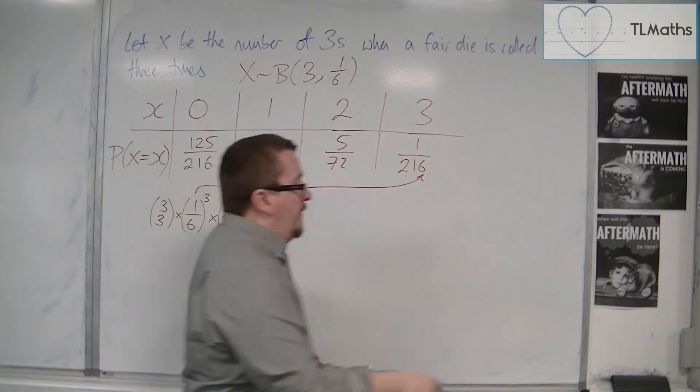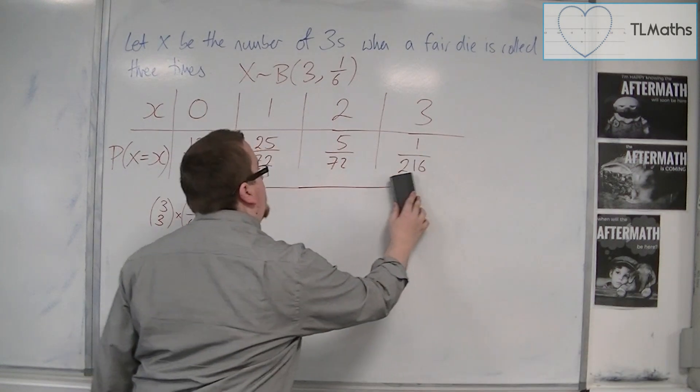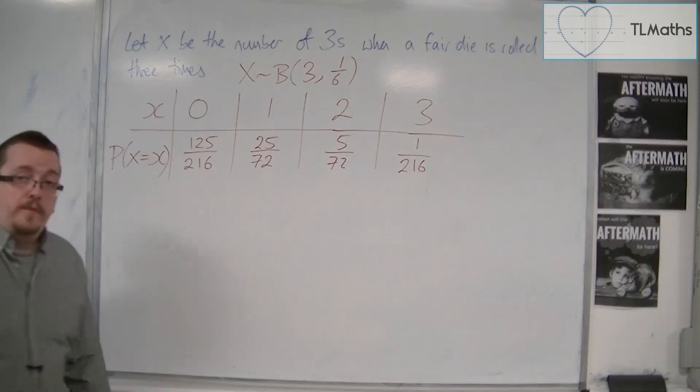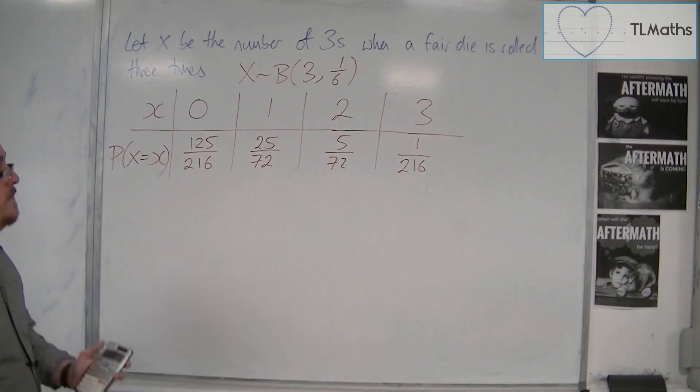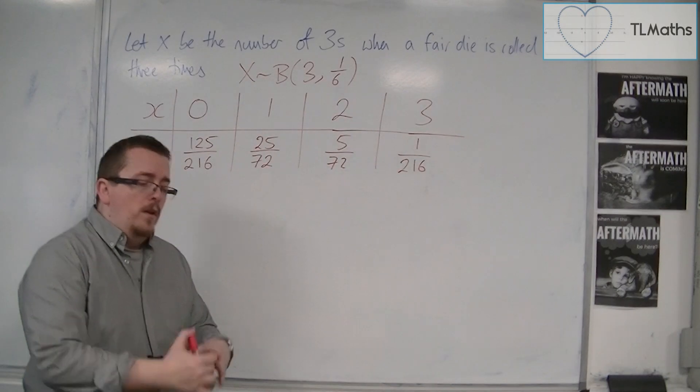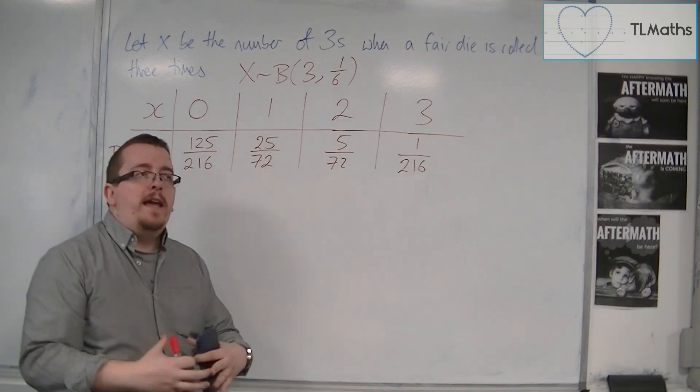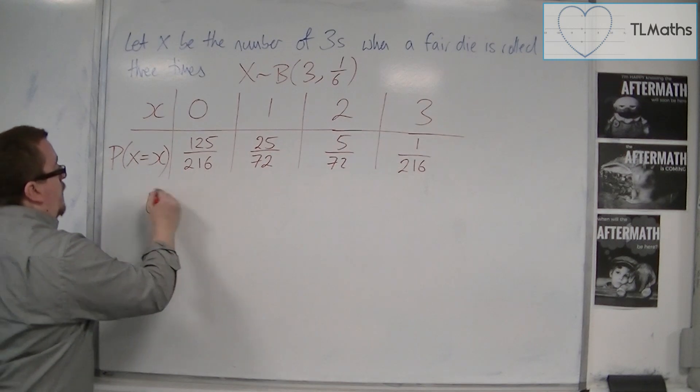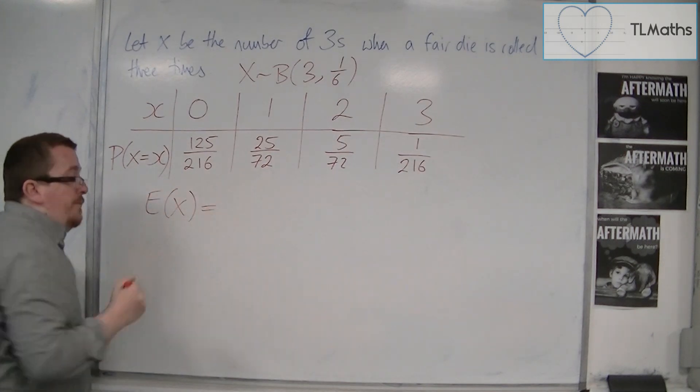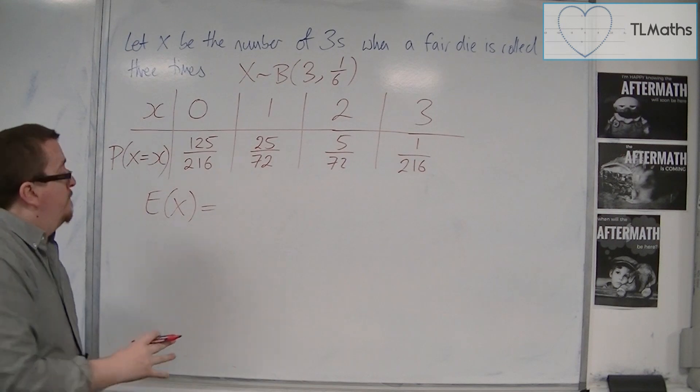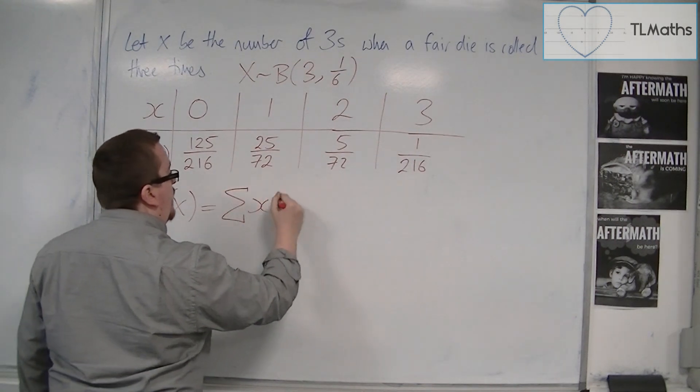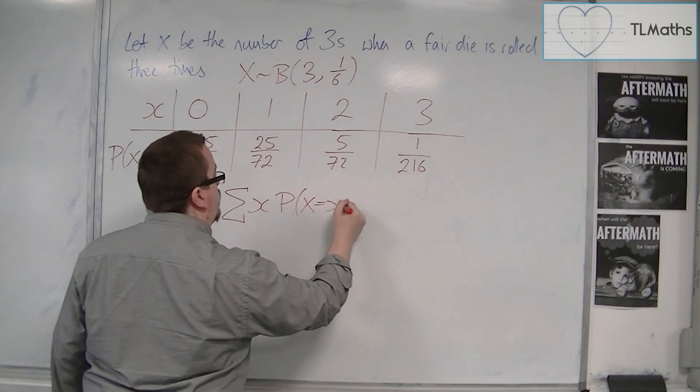So that is the discrete probability distribution for this binomial, and that's what it would look like. Now, when we worked out the expected value of a discrete random variable before, this was the sum of the x's times by each of their probabilities.